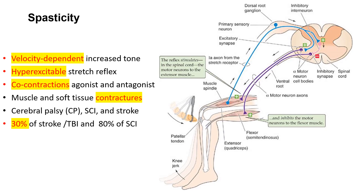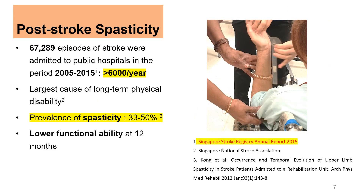The common causes of spasticity are cerebral palsy, spinal cord injuries, and stroke. Thirty percent of strokes will end up with spasticity and about 80% of spinal cord injuries result in spasticity. In Singapore, there are about 6,000 cases of stroke per year, with a prevalence rate of about 33 to 50% of spasticity among stroke patients, and they show significant reduction in functional ability at the end of one year.